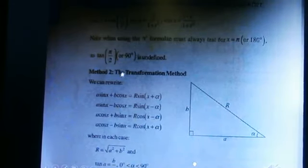And we use the transformation method, so we see the sides here. The sides are a, b, and r, and the angle is alpha.